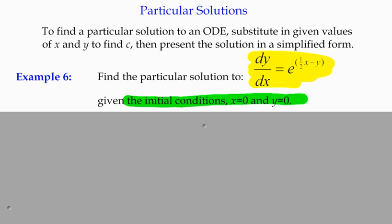Initial conditions just usually means at the start, initial meaning first. In this case it tells us x equals zero when y equals zero, so we've got an ordered pair that x and y are both zero at a particular point.